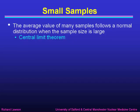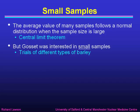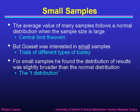Gossett was dealing with small samples, and he knew that the average value of many samples follows a normal distribution when the sample size is large — that's the central limit theorem that we've already talked about. But Gossett was interested in small samples, because in his trials of different types of barley, he wasn't able to produce very many different brews from each type. For small samples, he found that the distribution of results was slightly broader than the normal distribution, and hence he developed the t-distribution.